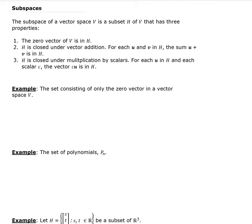In this lesson, we are going to talk about subspaces. A subspace of a vector space V is a subset H of V that satisfies three properties. The first property is that the zero vector in V must also be in H. The second property is that if you have two vectors U and V, and if they're both in H, then when you add those two vectors, U plus V, that also must be in H. That property is known as being closed under vector addition.